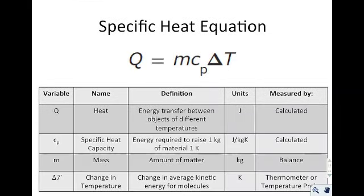Specific heat trends are important in temperature calculations. CP is the specific heat capacity — the energy required to raise one kilogram of material by one degree Kelvin. Its units are joules per kilogram·K (sometimes written as joules per kilogram·Celsius, since one degree Celsius equals one degree Kelvin). It's not the same as one degree Fahrenheit, so be aware of that.